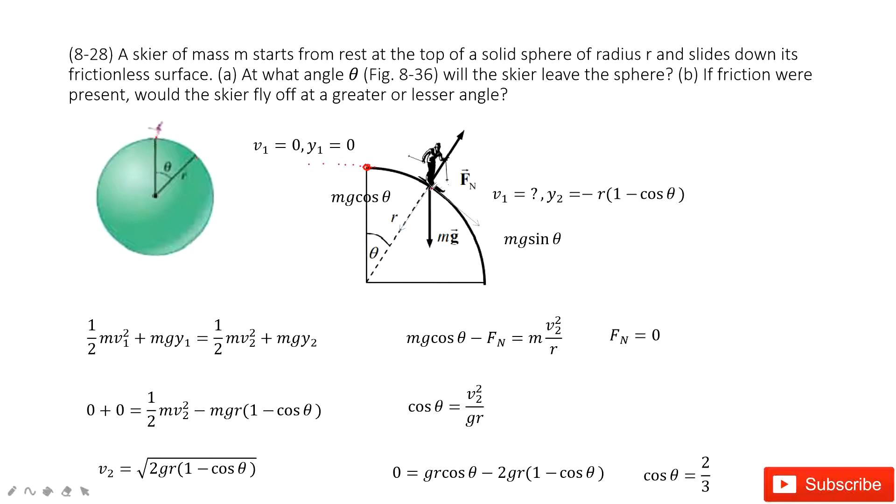And now this person moves to position two. This is V2, we don't know, want to find it. And then we need to find the position Y2. You can see this is R, and then project it in this direction. So this side becomes R cosine theta.